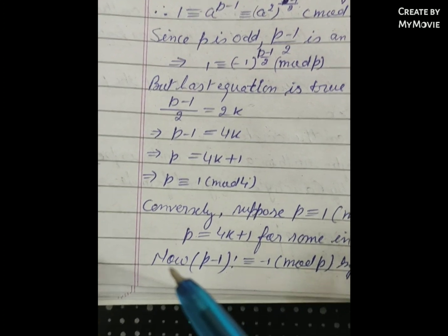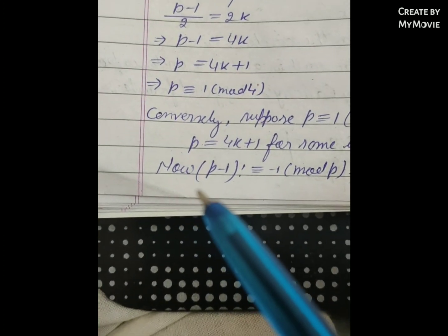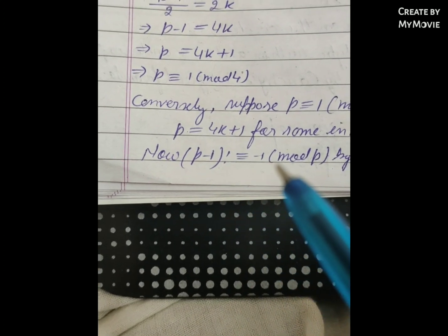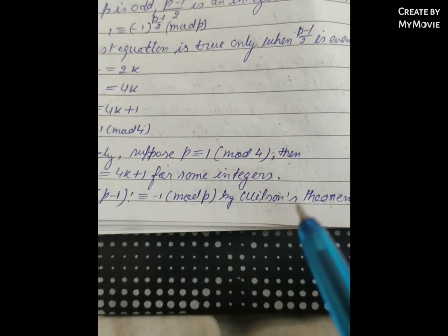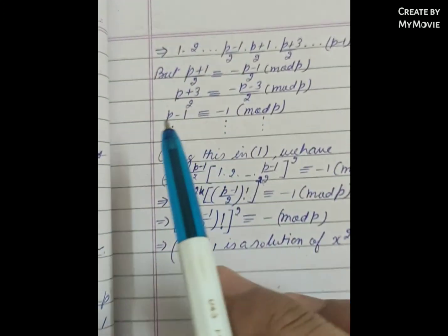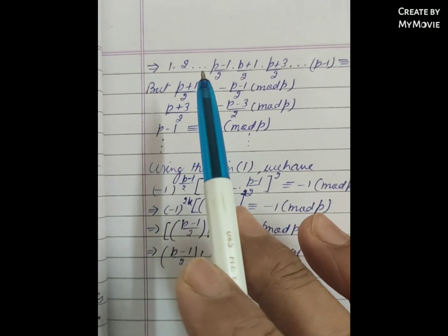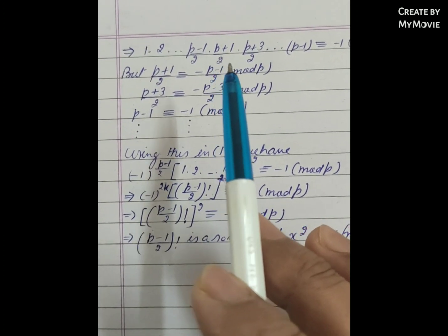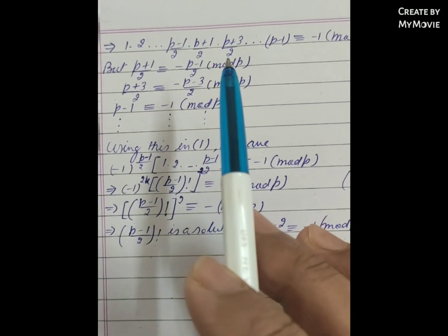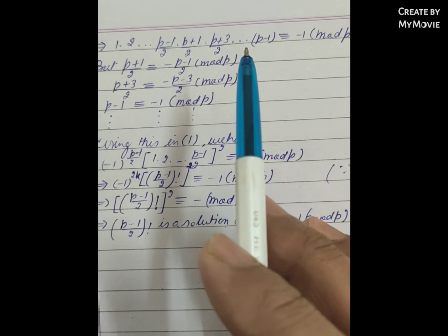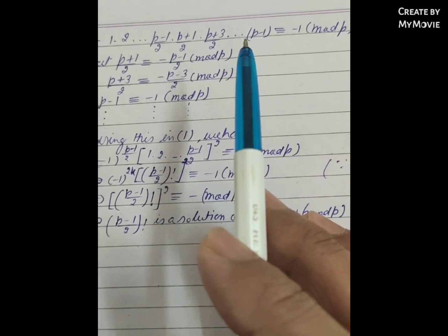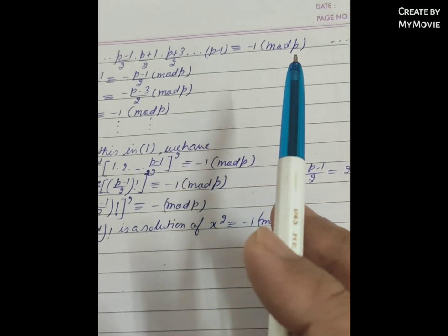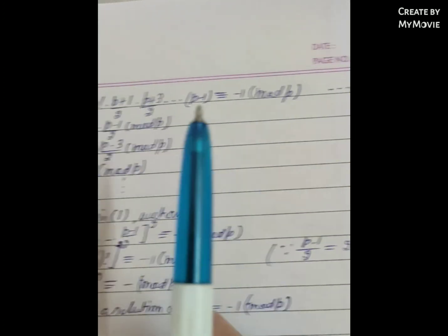By Wilson's theorem, (p-1)! ≡ -1 (mod p). We write this as: 1 · 2 · ... · ((p-1)/2) · ((p+1)/2) · ((p+3)/2) · ... · (p-1) ≡ -1 (mod p). Call this equation (1).